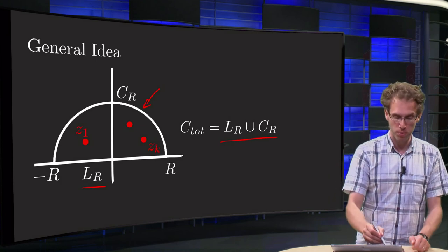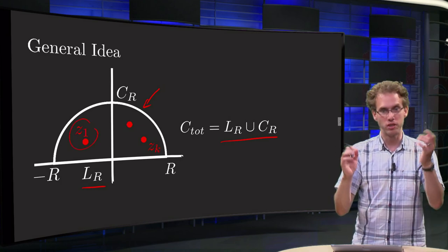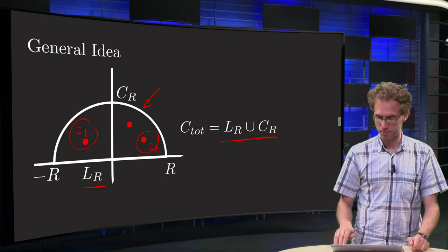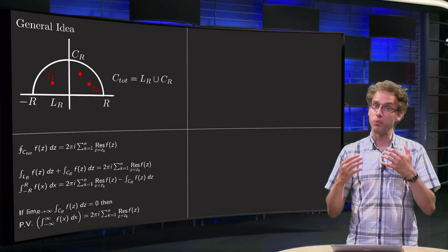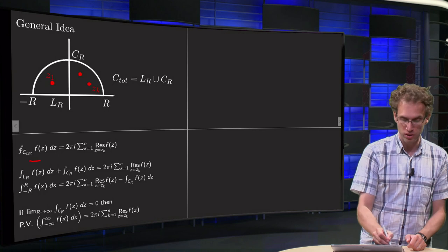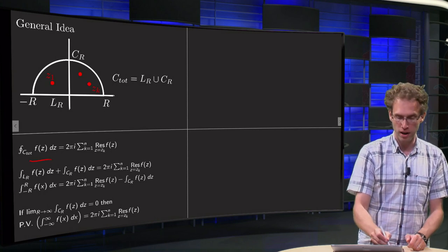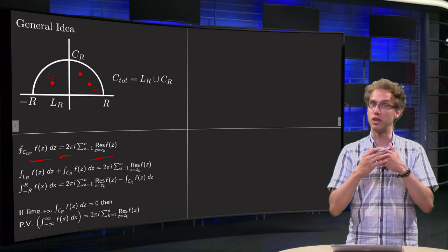Usually we have some poles inside, Z1, Z2, etc. up to ZK. And then we know that our total integral F(z) dz equals 2 pi i times the sum of the residues, which will be some number.